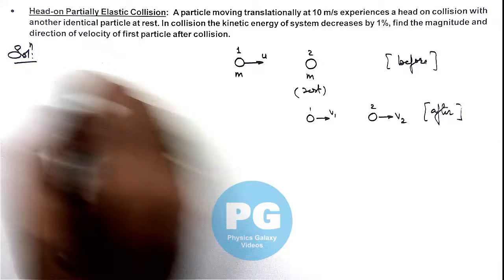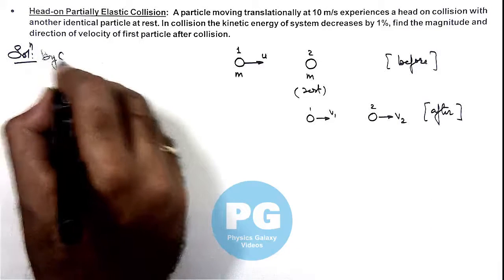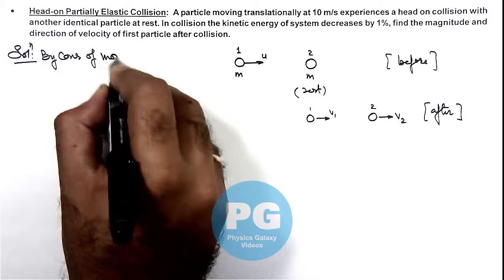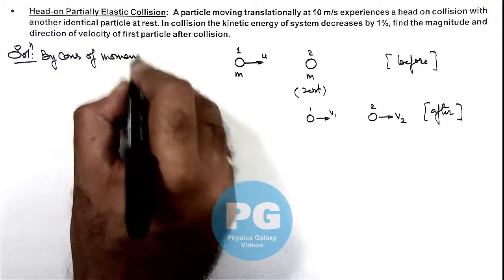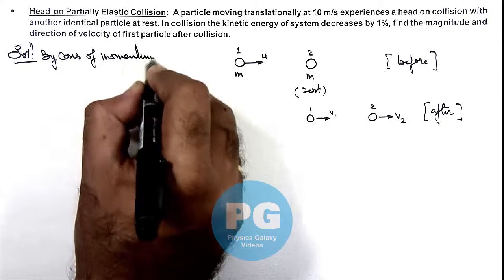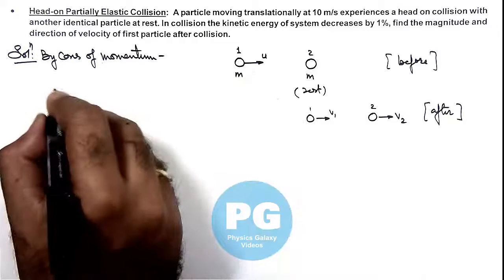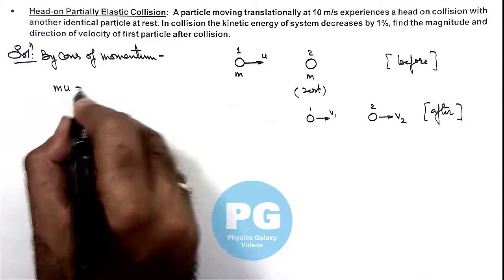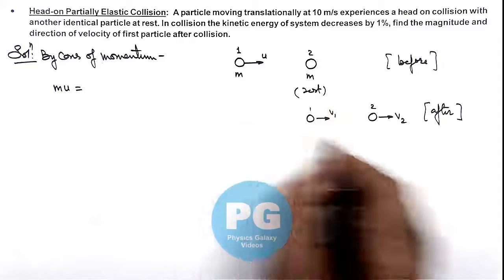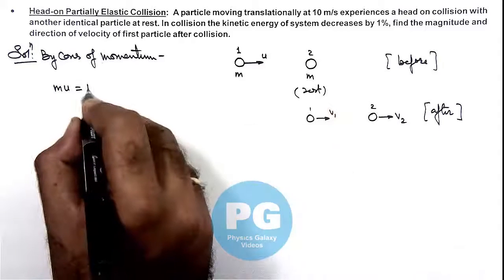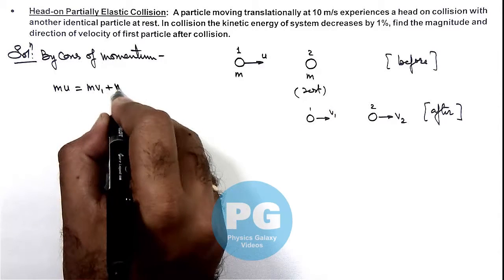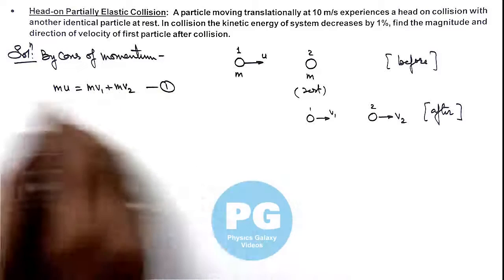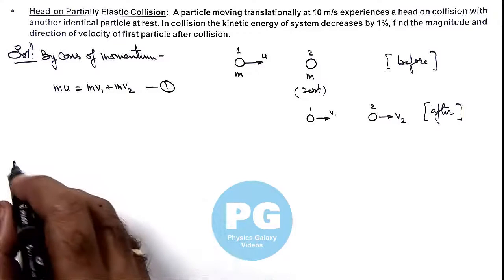By conservation of momentum, we can write the initial momentum of the particle as m·u, and after collision the momentum is m·v1 plus m·v2. This is our first equation; here m can be cancelled out, giving u = v1 + v2.